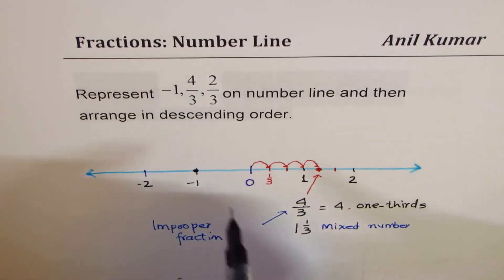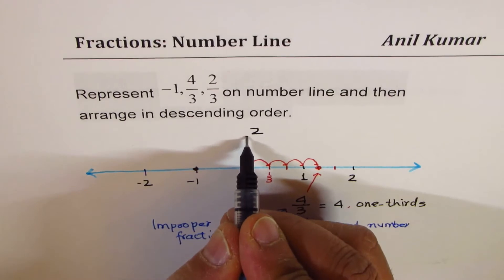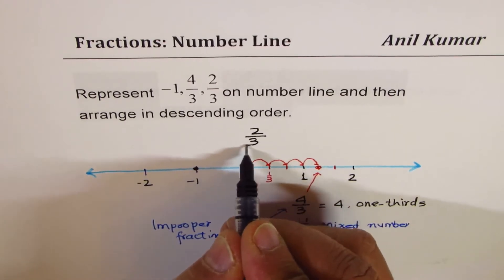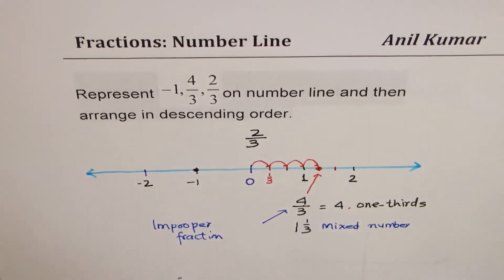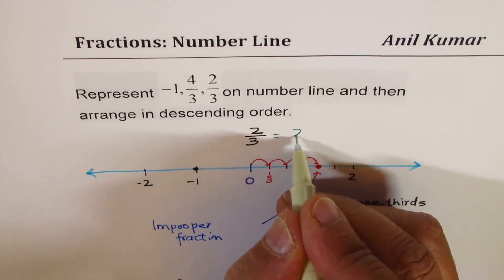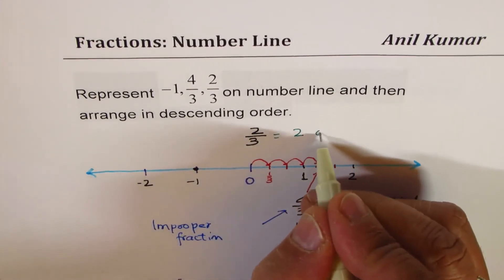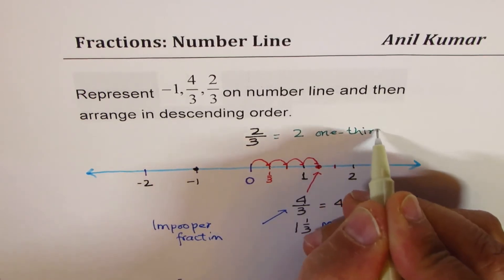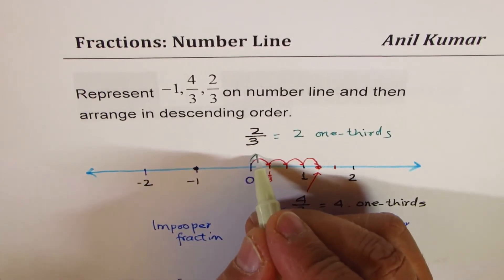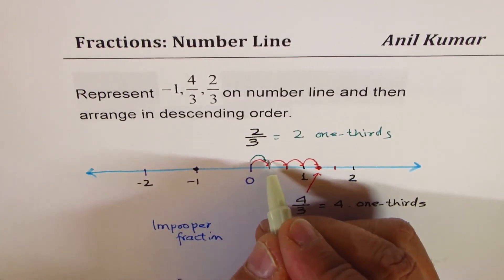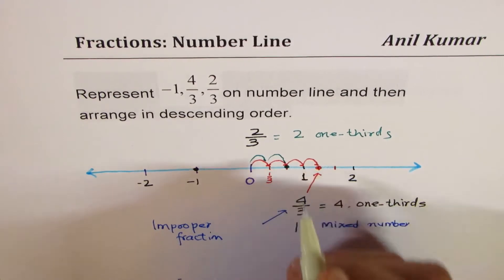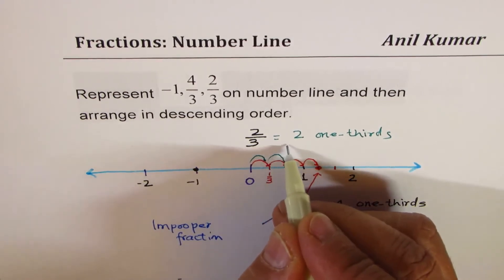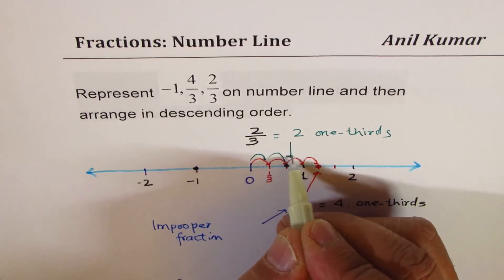Can you tell me where 2/3 will be? Let's mark 2/3 on this number line. 2/3 means 2 one-thirds — so this is 1 one-third and the second one, so that is 2/3 right there.